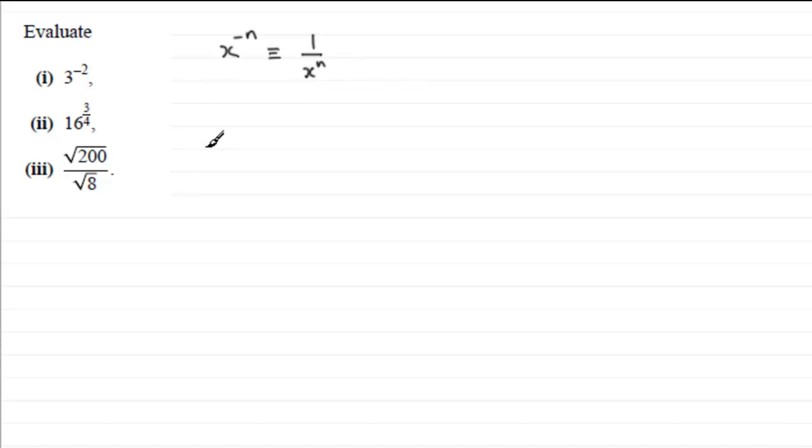So in part 1, you've got 3 to the power minus 2, and that's going to be equal to 1 over 3 squared. 1 over 3 squared, 3 squared is 9, so you've got 1 ninth.